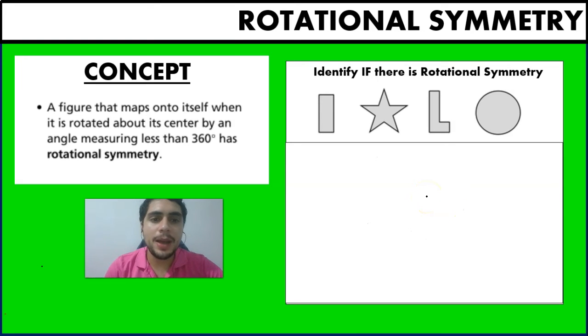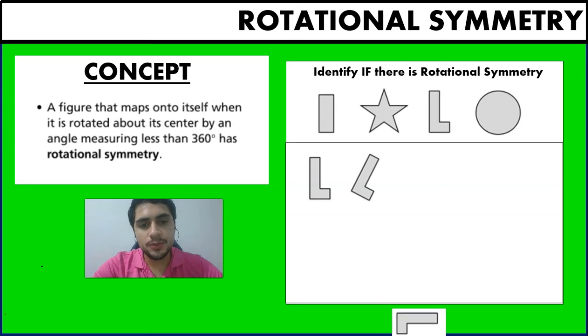What about the next one? So what about that small L we have right there? So when we rotate it, we rotate it a little bit and it's completely horizontal.